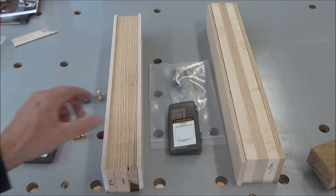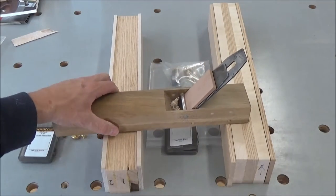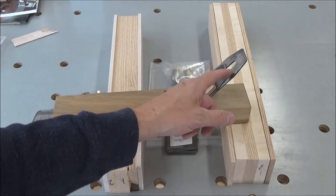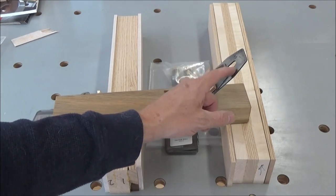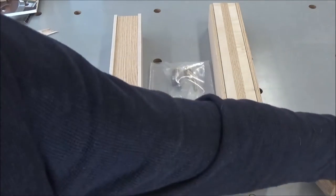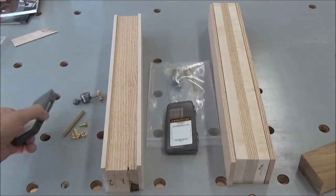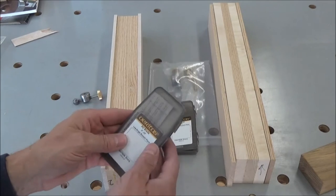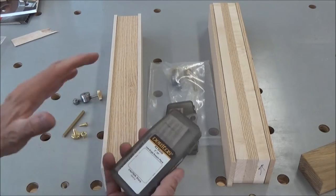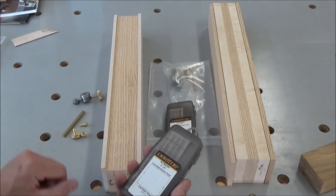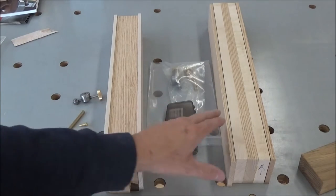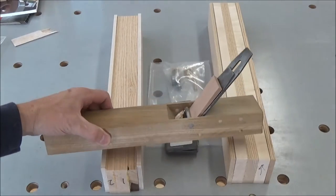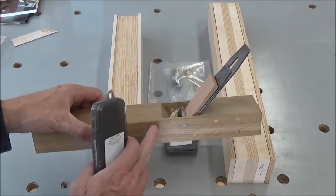The blade that I had came out of an old Stanley; it was just a shade over 80 thousandths thick. The blade that comes with the Veritas is a full eighth inch thick, so that will help cut down on the chatter and vibration, which I did have a little bit of with this plane.